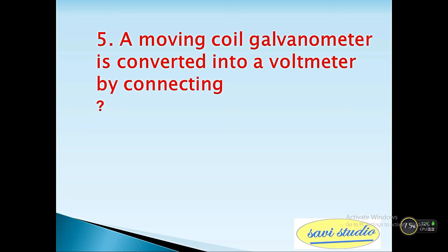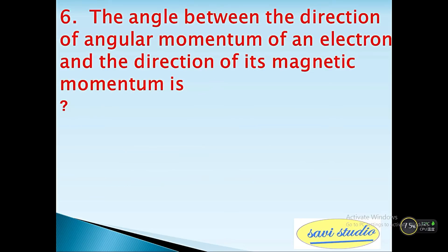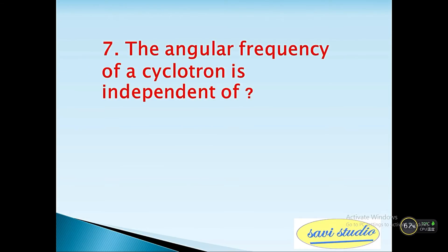Question 6: The angle between the direction of angular momentum of an electron and the direction of its magnetic moment is? Answer: 180 degrees. Seventh question: The angular frequency of a cyclotron is independent of? Answer: speed.